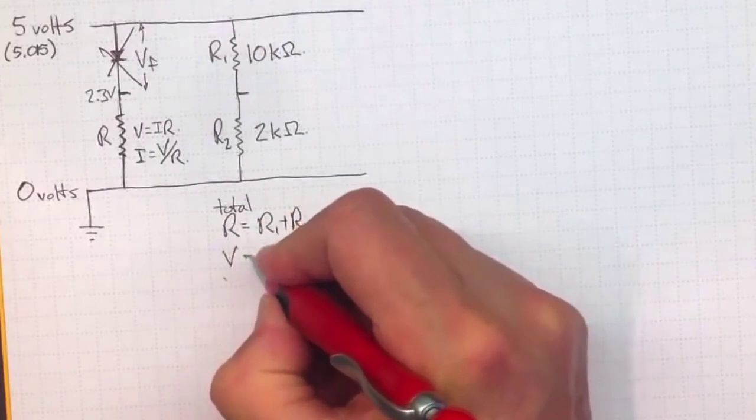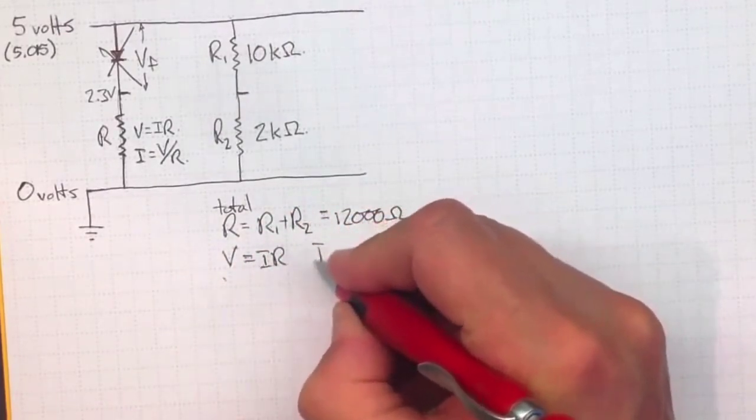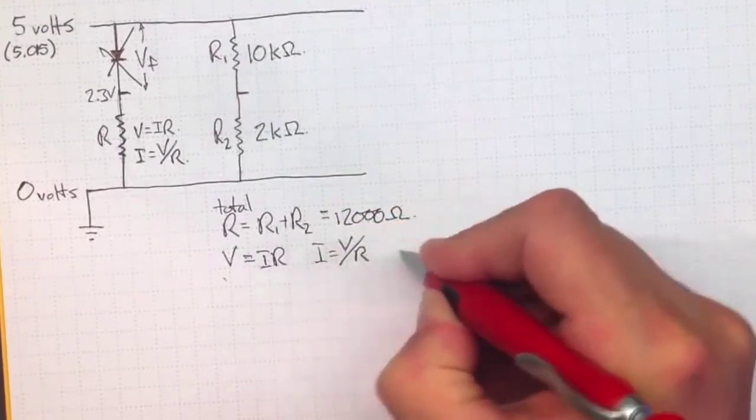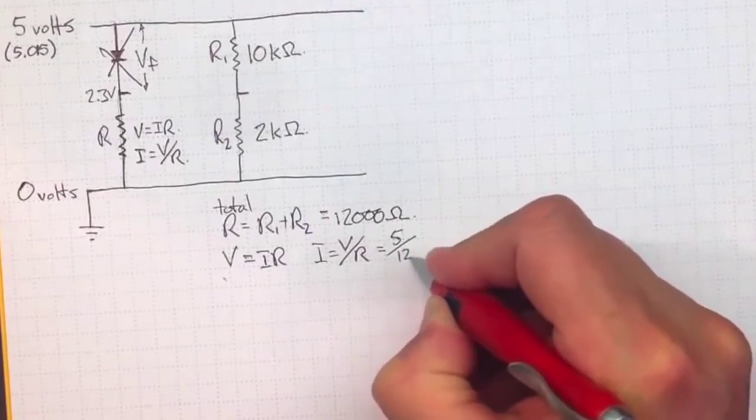V is still equal to IR, or I equal to V over R. If we take 5 volts, divide it by 12,000.